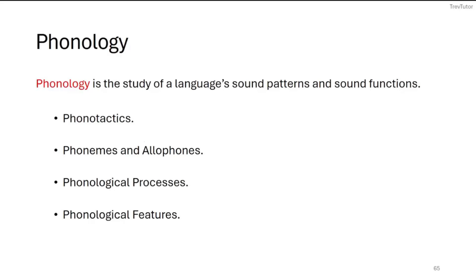We're going to start with phonotactics, which is the allowable clusters of sounds that we can produce in a specific language, then move into phonemes and allophones, which are the differences between how we perceive sounds and how we actually produce them depending on certain environments, move into phonological processes to give names to these different changes and alterations that we make, and then end with phonological features and rules, which is probably one of the most difficult parts of phonology.